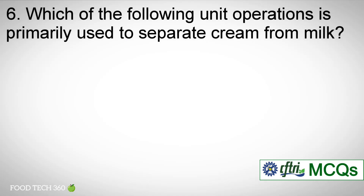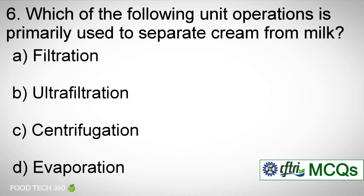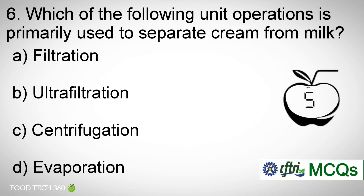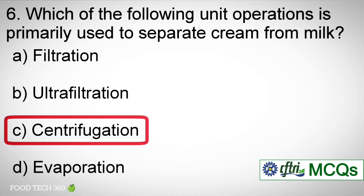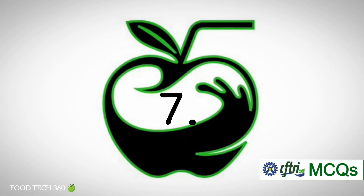Question number 6: Which of the following unit operations is primarily used to separate cream from milk? A. Filtration. B. Ultrafiltration. C. Centrifugation. D. Evaporation. Correct answer: C — Centrifugation.